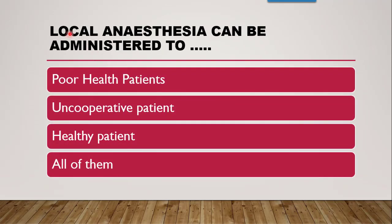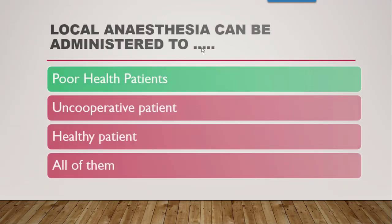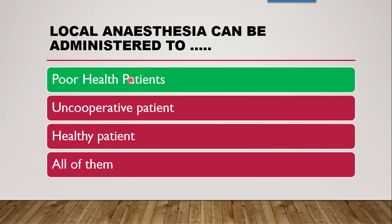Next question: local anaesthesia can be administered to which patients? Poor health patients, uncooperative patients, or healthy patients? The correct answer is poor health patients. For example, in dentistry where the patient is suffering from a dental problem, that particular part can be locally anaesthetized and the surgery can be done.